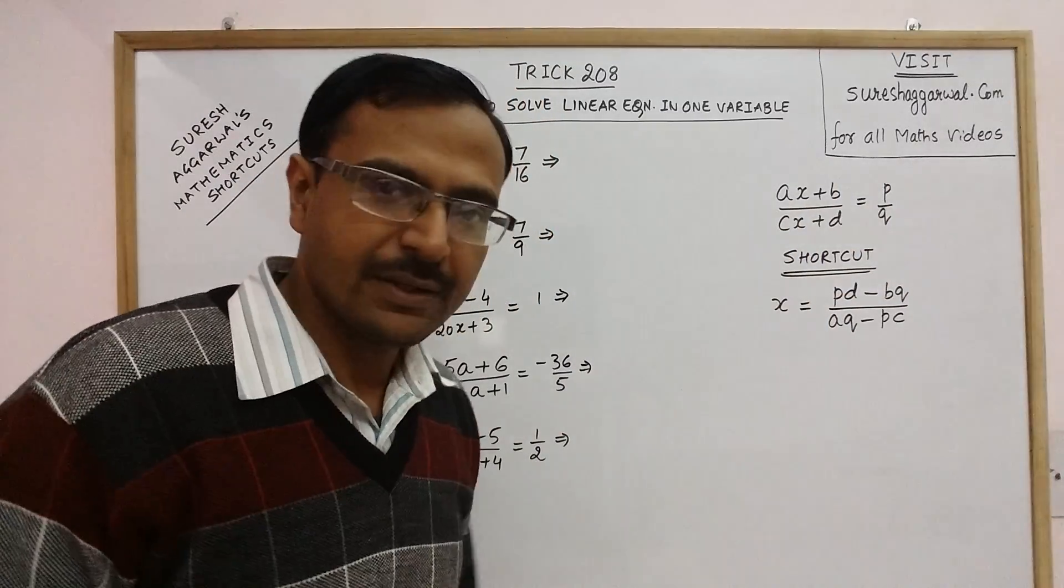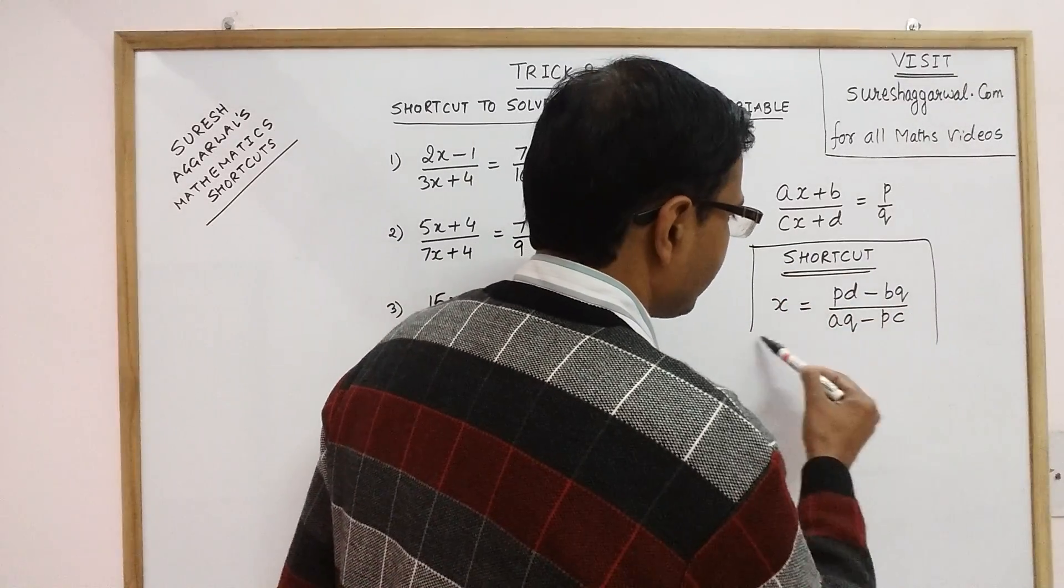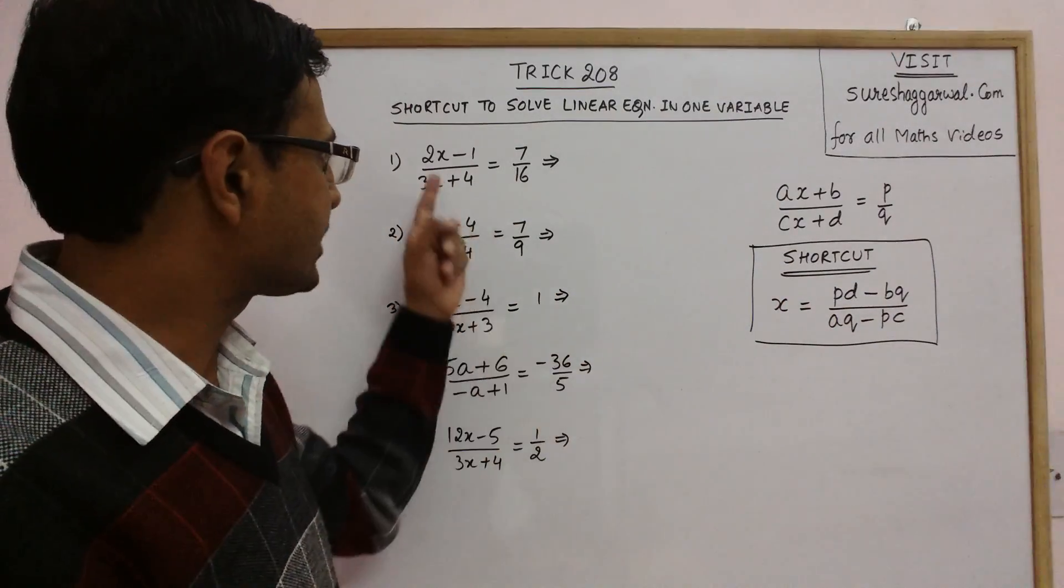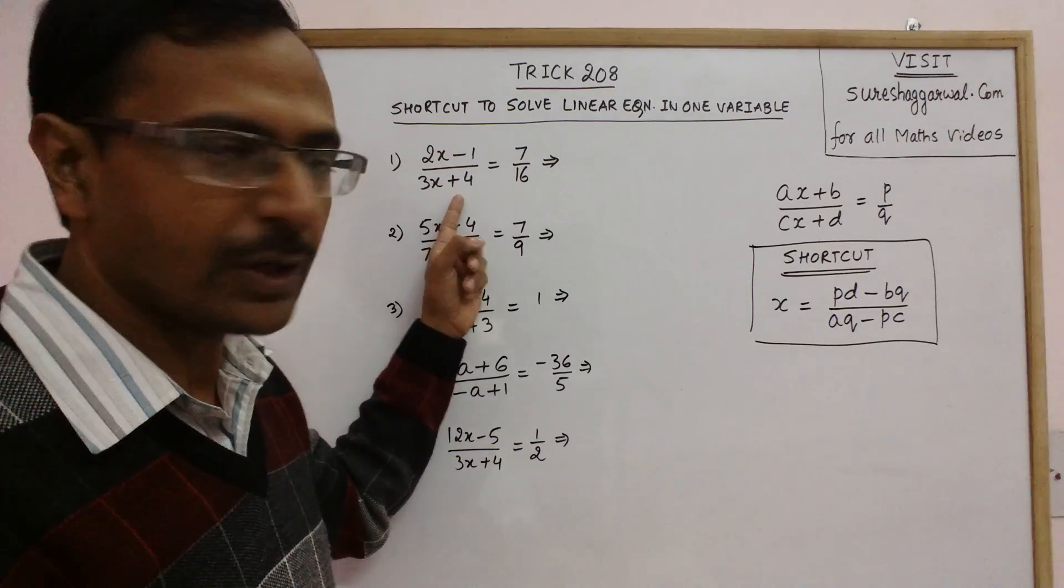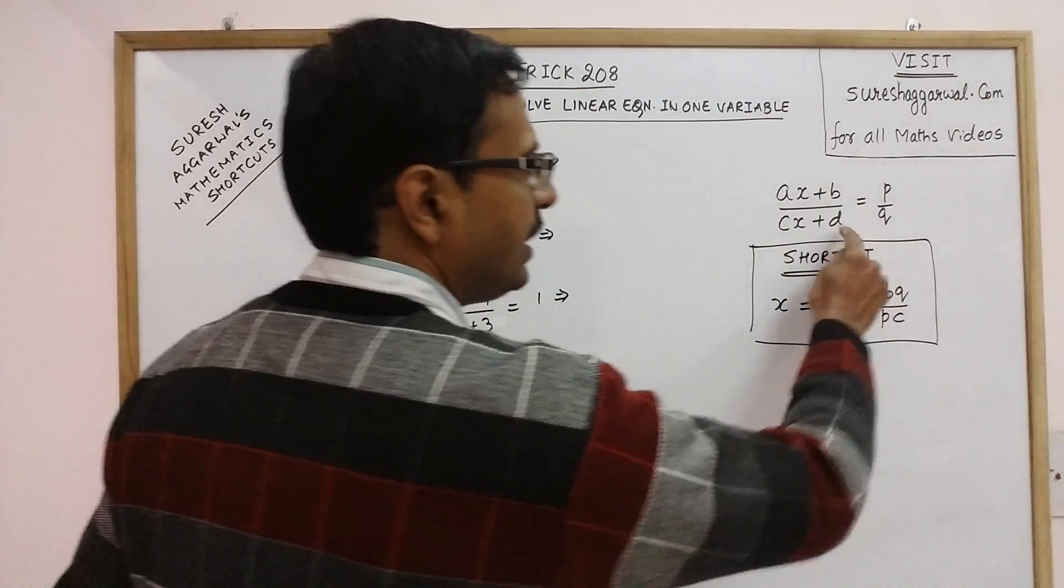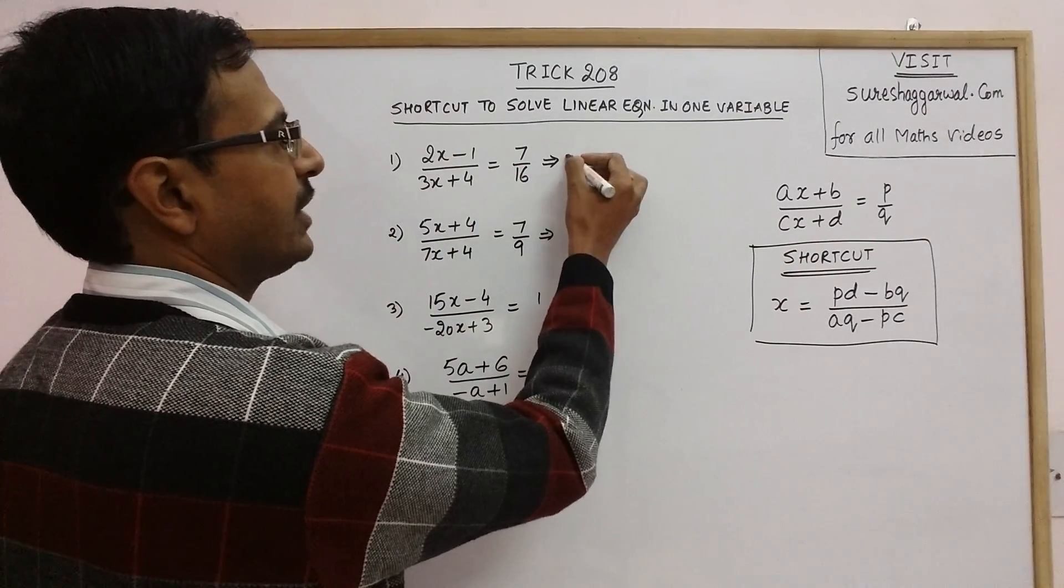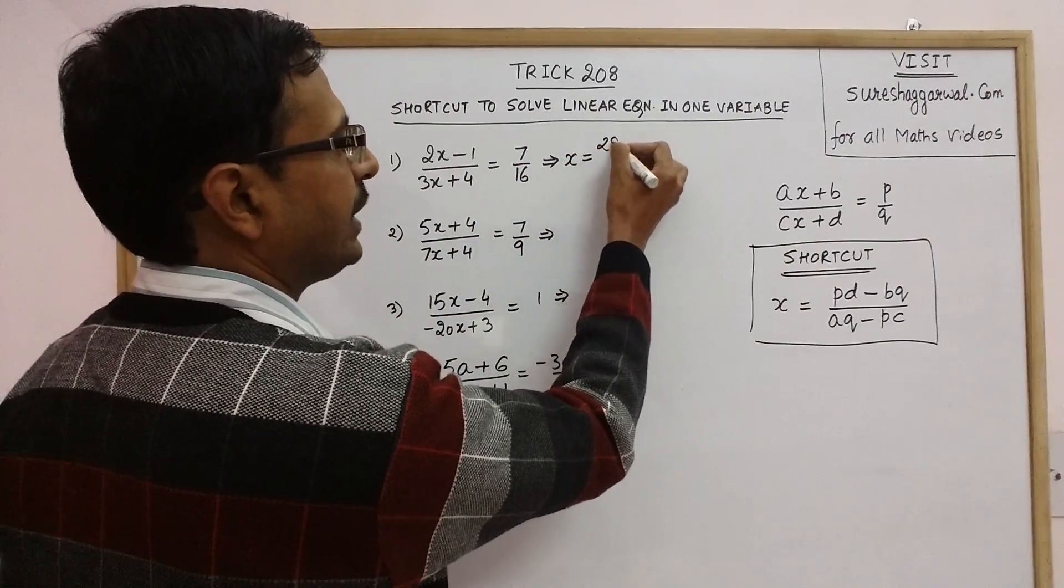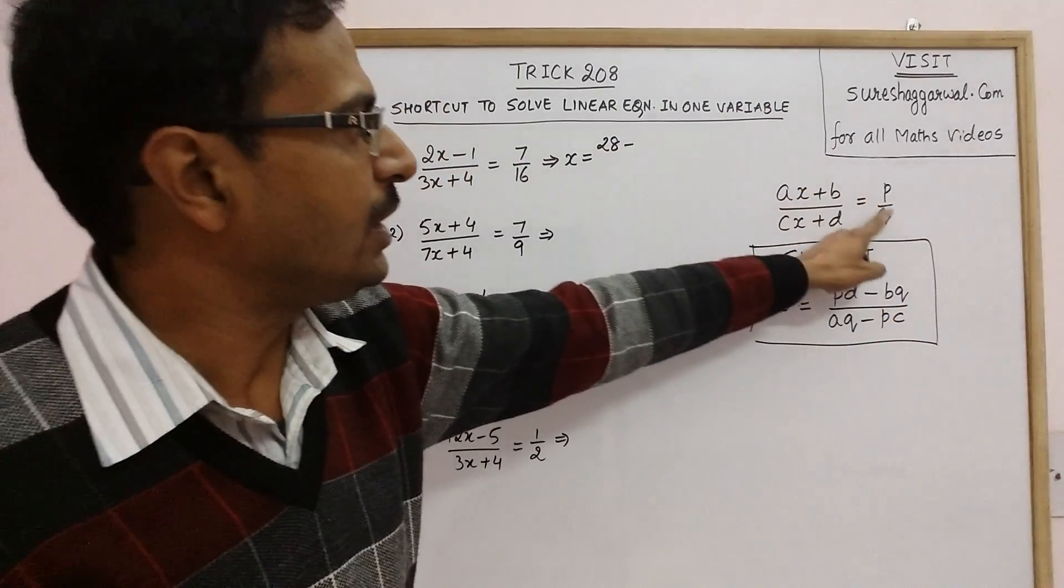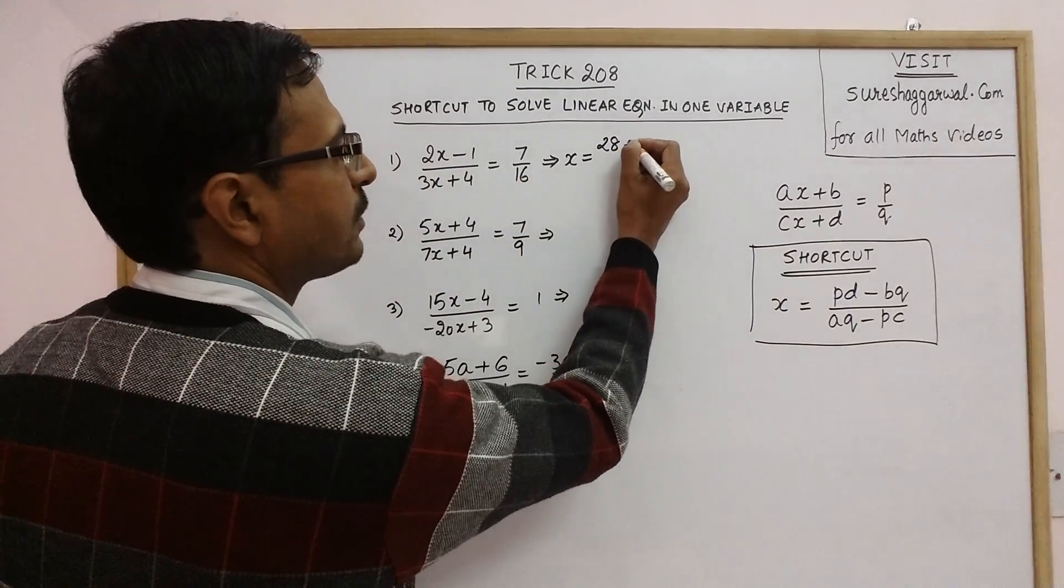Now let us try and apply this shortcut to solve some problems of this kind. So this is the first problem. Here we have (2x - 1)/(3x + 4) = 7/16. Now see pd, so 7 into 4 is 28. So we are finding the value of x directly now. 28 minus bq. bq is minus 1 into 16, so it becomes plus 16.